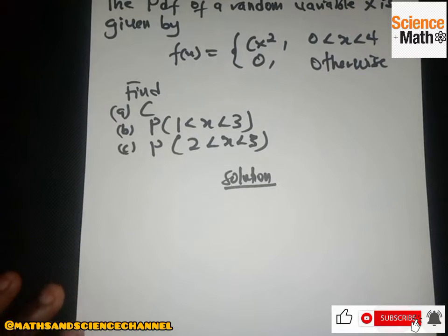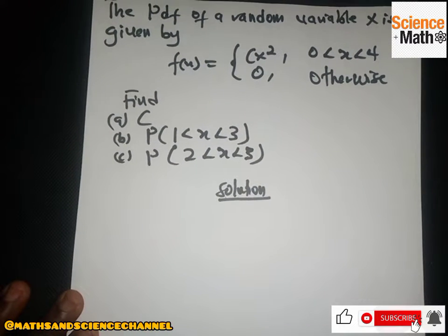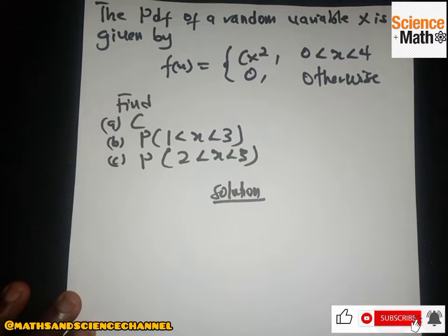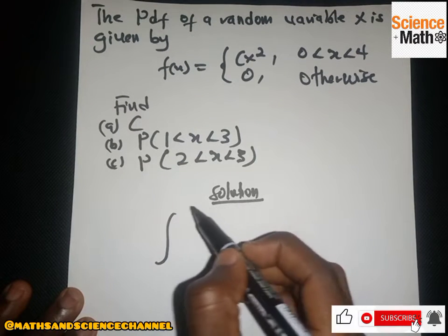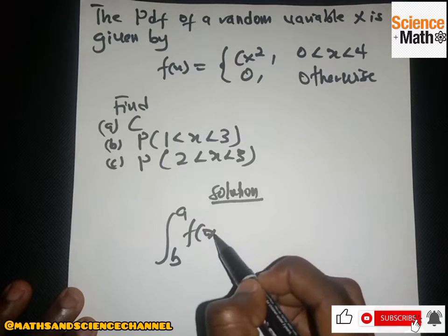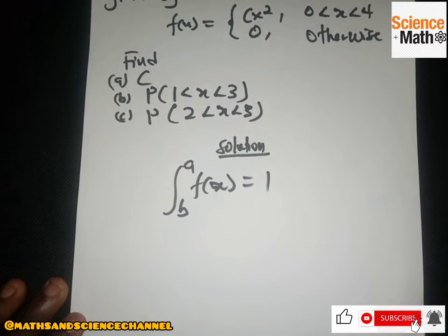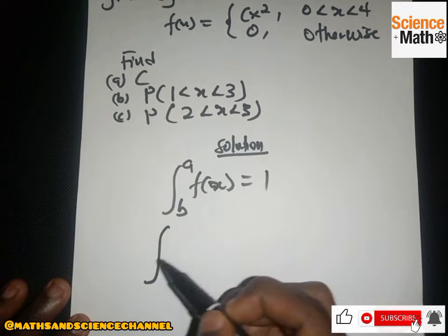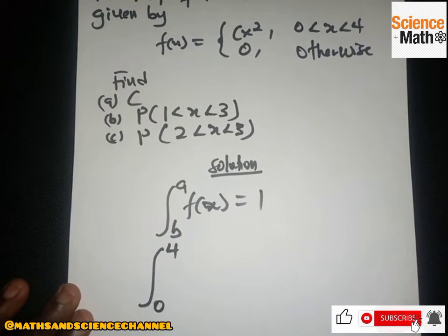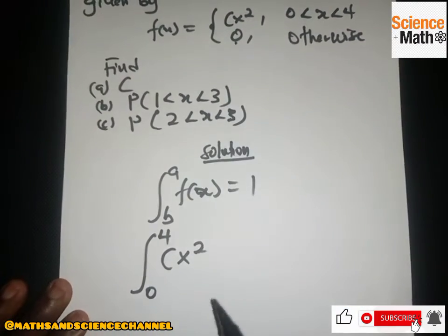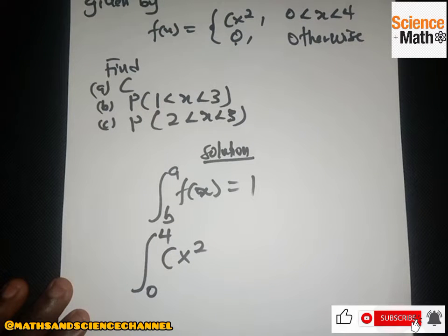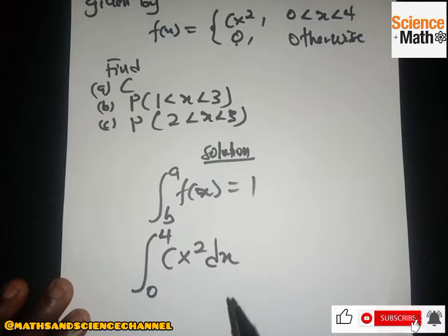So let's look at how to solve this. We need to find c. Since these are continuous functions, the first thing we do is use the property of continuous functions where the integral from the lower limit to the upper limit of f(s) must equal 1. So we have the integral from 0 to 4 of cs² ds equal to 1. We can leave out the integral of zero since it contributes nothing.